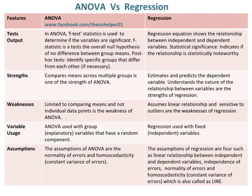Comparing means across multiple groups is one of the strengths of ANOVA. Whereas, estimating and predicting the dependent variable and understanding the nature of the relationship between variables are the strengths of regression. Limited to comparing means and not individual data points is the weakness of ANOVA. Whereas, assuming a linear relationship and being sensitive to outliers are the weaknesses of regression.